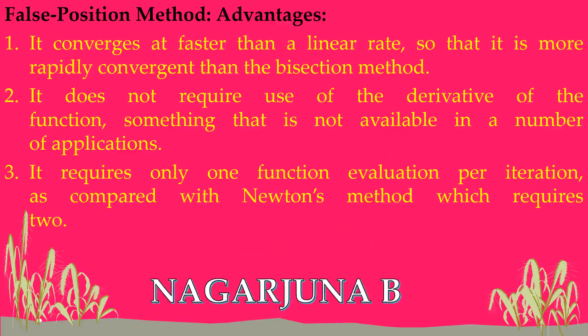Moving on to the advantages: it converges at a faster than linear rate — it is more rapidly convergent than the bisection method. In bisection we may reach up to eleven or twelve steps, whereas in the false position method we get the answer within six or seven steps. It also does not require the use of the derivative of the function, which is not available in a number of applications. The formula does not use any derivative, making it easier to apply.